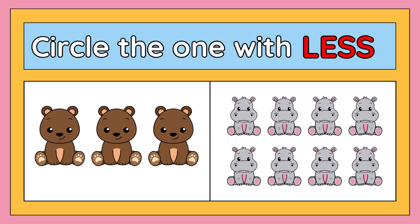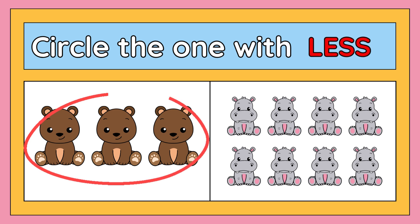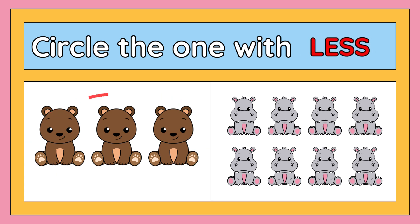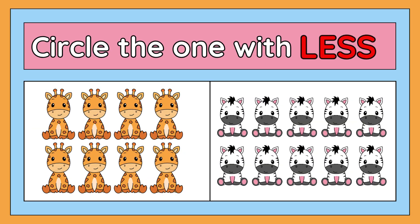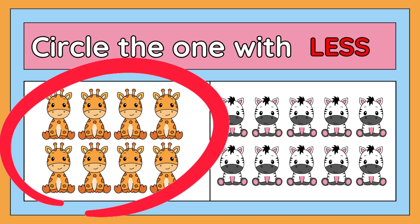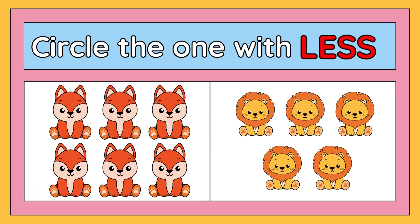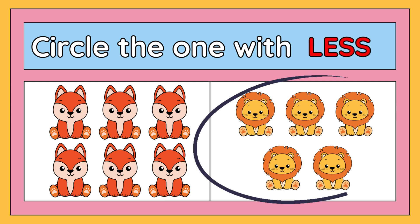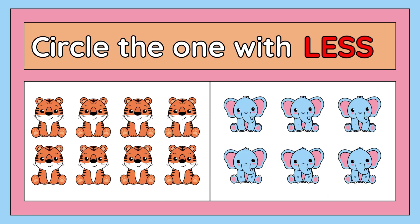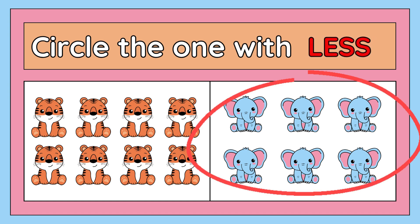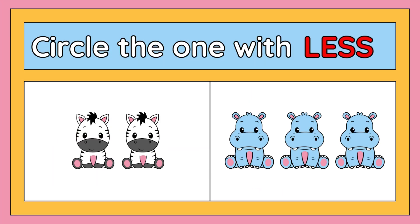Circle the one which is less. Correct. Circle the one which is less. Correct. Circle the one which is less. Correct. Circle the one which is less. Correct. Circle the one which is less. Correct.